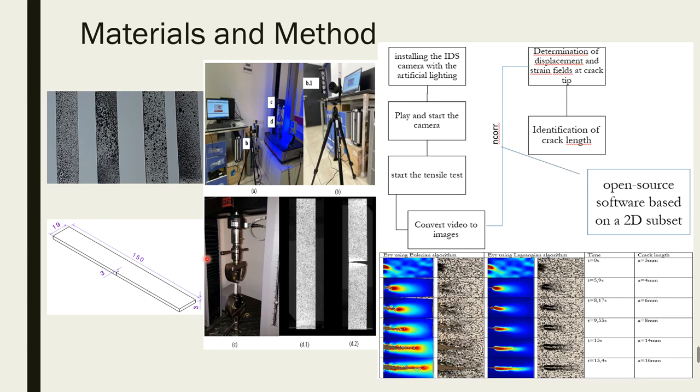Random patterns were painted on each specimen surface with black paint to create the speckle pattern, which was differentiated from the continuous displacement field using the digital image correlation technique. The digital images were captured using an IDS camera with an artificial source light.